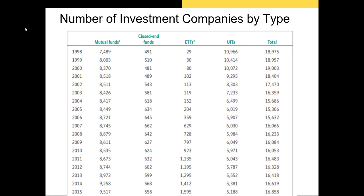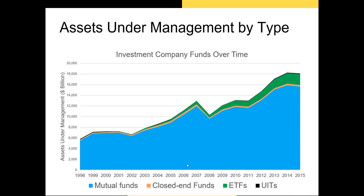Let's take a look at the number of investment companies by type through time. While the total number of managed funds has decreased, much of that decline has been due to unit investment trusts. Mutual funds and ETFs have both grown in popularity, though ETF growth has been much greater in percentage terms. Looking at assets under management through time, mutual funds manage the majority of investor capital, although in recent years ETFs have increased their share of the investment pie.